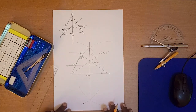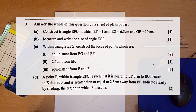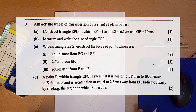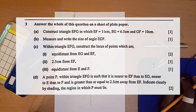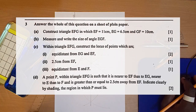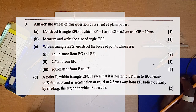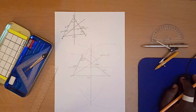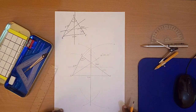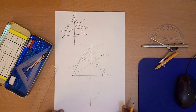Let's now go to question 3d. It says: a point P within triangle EFG is such that it is nearer to EF than to EG, nearer to E than to F, and is greater than or equal to 2.5 centimeters away from EF. Indicate clearly by shading the region in which P must lie. So here we have three conditions to satisfy in order to identify the region where P must lie.